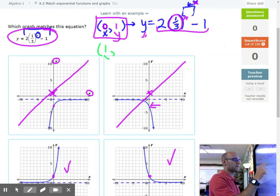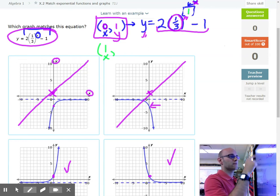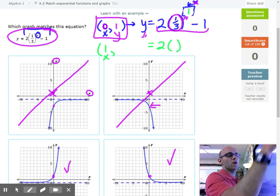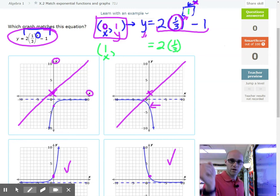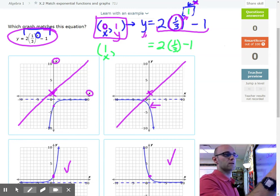So plug in a 1. Here we go. So where we see X, we're going to put a 1 there. Let's work it out. What is Y going to equal? 2 times, okay, 1 third to the 1 power. That's just saying you have 1 of the 1 thirds. That's just 1 third. Okay.